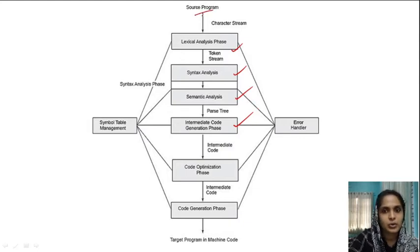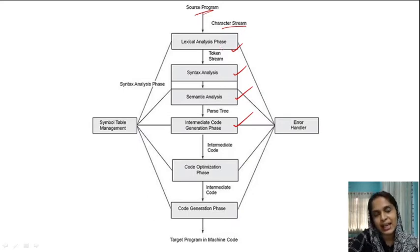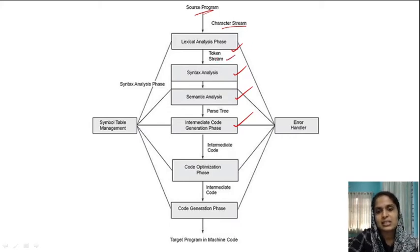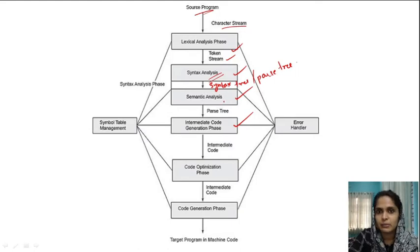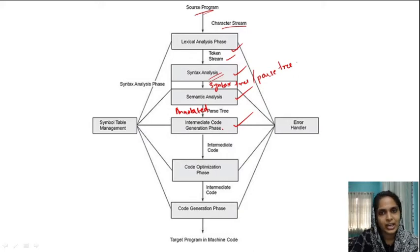Our source program, which consists of a stream of characters, is fed to the lexical analyzer. The lexical analyzer converts the stream of characters into a stream of tokens, which is then fed to the syntax analysis phase — also known as the parser — which converts the token stream into a grammatical structure known as a syntax tree or parse tree. This is then fed to semantic analysis where type checking is done, producing an annotated parse tree. Finally, the intermediate code generation phase creates intermediate code from this annotated parse tree.